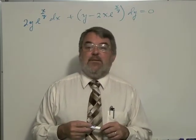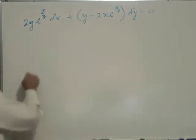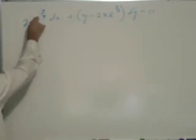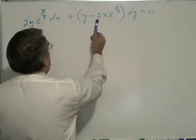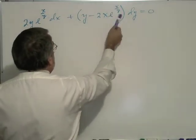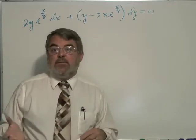This is problem 10 on page 61. I'll read it to you. 2y e to the x over y times dx plus parentheses y minus 2x e to the x over y dy equals to 0.